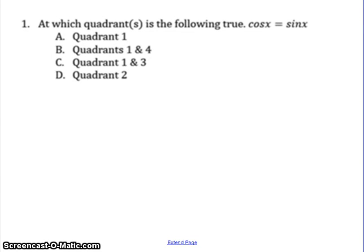This is Pre-Calculus Final Exam Review 1B, Problem 1. At which quadrant is the following true? Cosine of x equals sine of x.